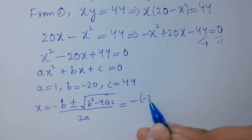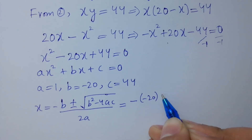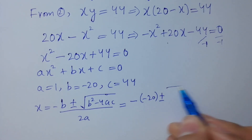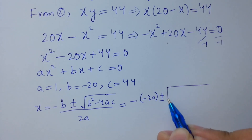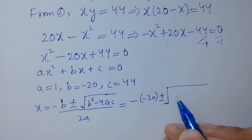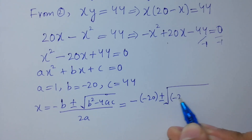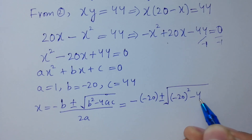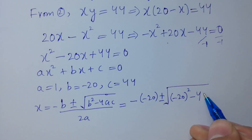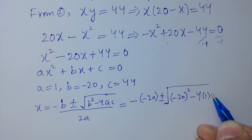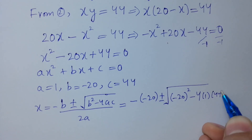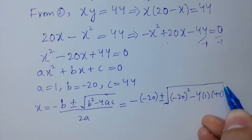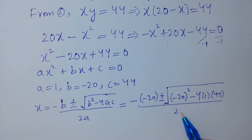b is minus 20, a is 1, and c is 44, over 2 times a which is 1.